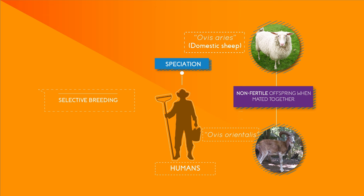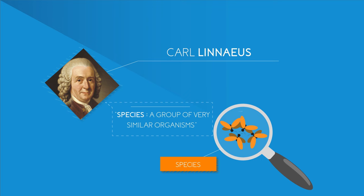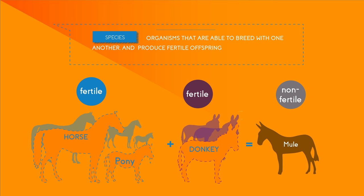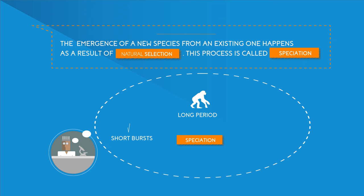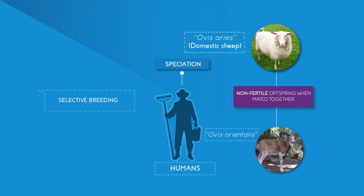So from this video you should now know that a species is a group of organisms that can produce fertile offspring. In some cases, such as donkeys and horses, different species can mate but their offspring are not fertile, hence donkeys and horses are different species. You should also know that new species can emerge for different reasons, such as a change in habitat and also through humans selectively breeding.